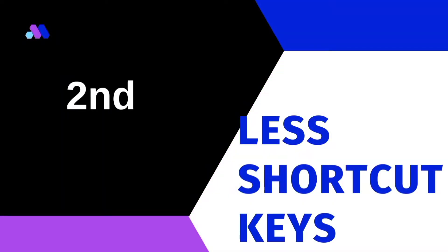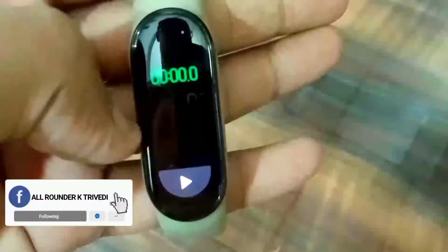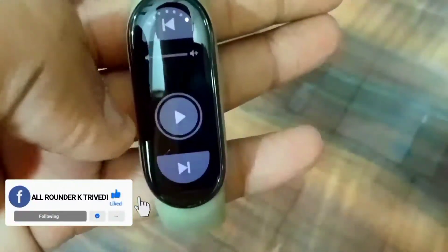This brings us to the shortcut keys issue. In Mi Band 6, you can only use 6 shortcut keys. In Mi Band 5, you could use up to 10 shortcut keys. If you want to use a real app, you can use any shortcut keys, but Mi Band 6 has reduced this number.